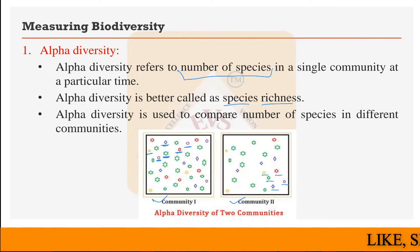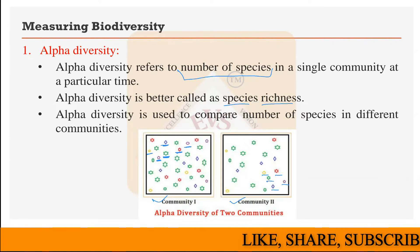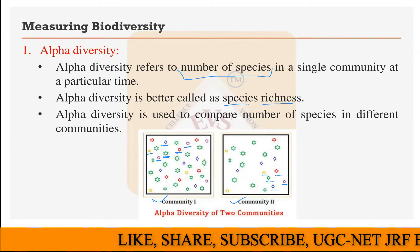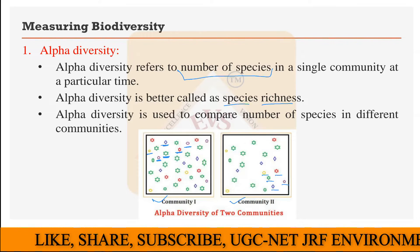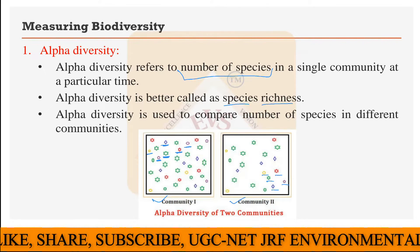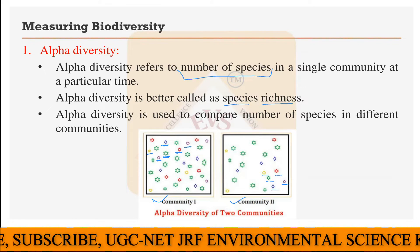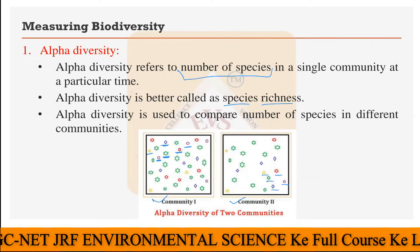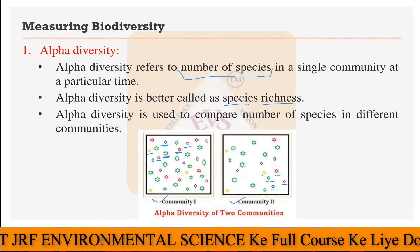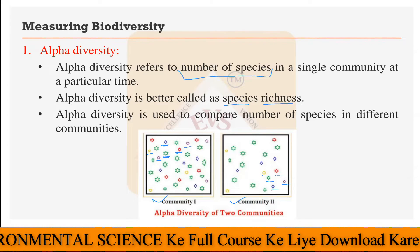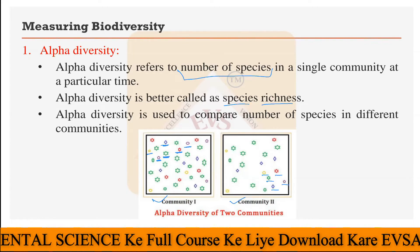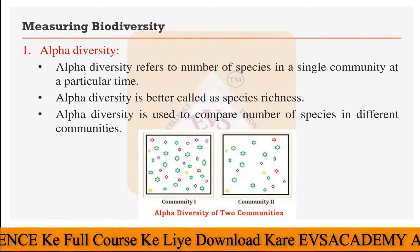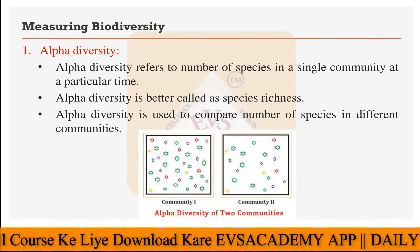Alpha diversity is used to compare the number of species in different communities — community one, community two, community three, four — and you compare all these communities based on the number of species present in them. This can be termed as alpha diversity. This is the very first type of diversity.